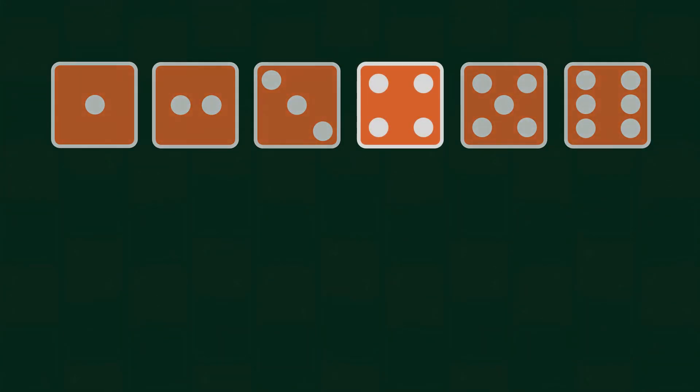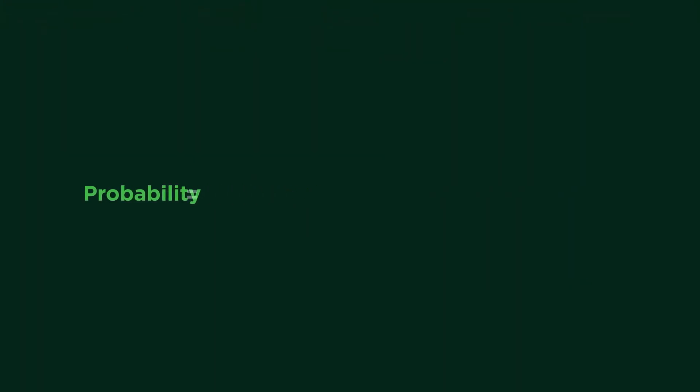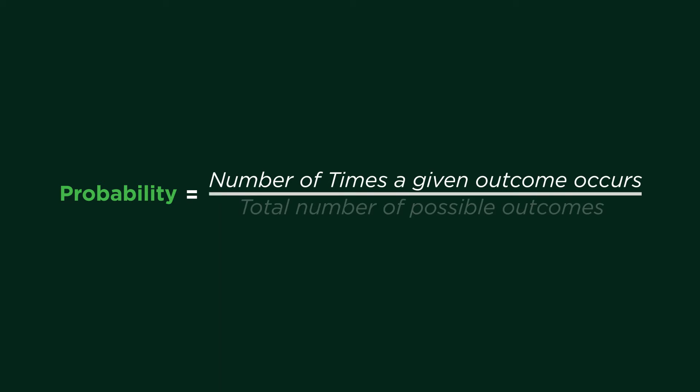If you roll a dice, there are six possible outcomes, and the chance of getting 4 is 1 out of 6. Remember this formula to help you do the calculations. Probability equals the number of times a given outcome occurs over the total number of possible outcomes.